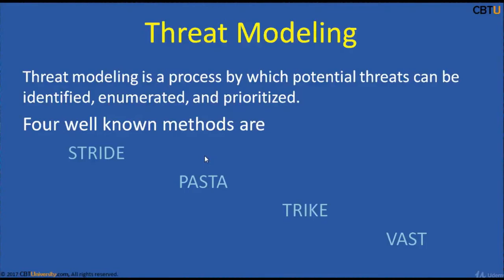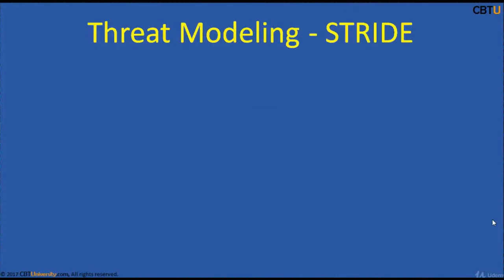Threat modeling helps in identifying the high-value assets, assets vulnerable to attack, and possible tracking of attack vectors. There are four well-known methods of threat modeling: STRIDE, PASTA, TRIKE, and VAST.